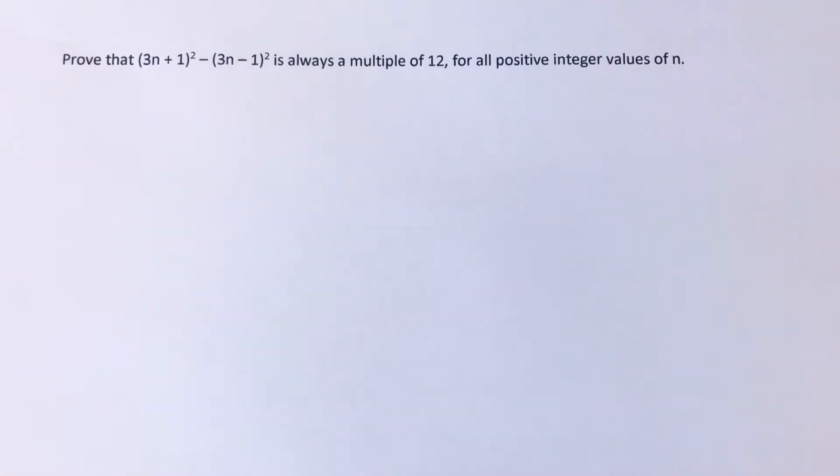Hi guys, welcome back. This is Maths3000. Today we're going to prove that 3n plus 1 squared minus 3n minus 1 squared is always a multiple of 12 for all positive integer values of n.